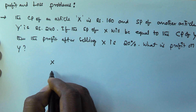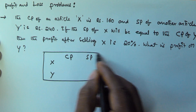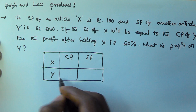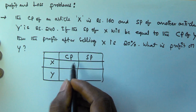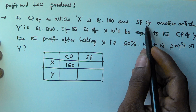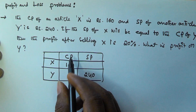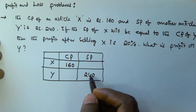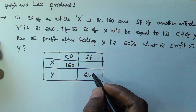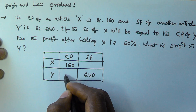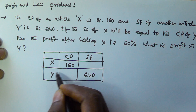So here, there are two articles. Each one has a cost price and selling price. The cost price of article X is 160 rupees — that is given. The selling price of article Y is 240 rupees — that is given. The selling price of X is equivalent to the cost price of Y.